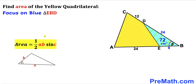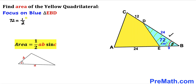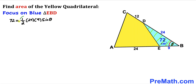Let's recall the area of a triangle formula: area equals one-half times A times B times sine of angle C, where angle C is between sides A and B. Applying this formula to blue triangle EBD, we get 72 equals one-half times 24 times 9 times sine of theta. Simplifying those numbers gives us 108.